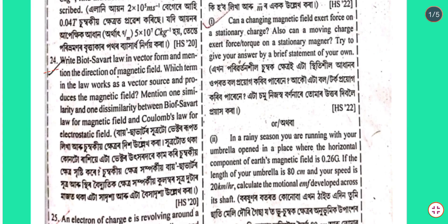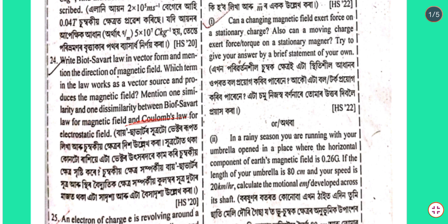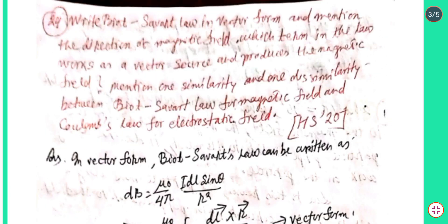Question number 24: Write Biot-Savart law in vector form and state the direction of the magnetic field. Which term in the law works as a vector source? Mention one similarity and one dissimilarity between Biot-Savart law for magnetic field and Coulomb's law for electrostatic field.